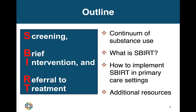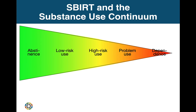Some of the slides I'll show will have more information than I speak to. Feel free to stop the video to take in those details. Before I can talk about SBIRT, I need to explain the continuum of substance use. Each of us and our patients fall into one of five categories with regard to our drinking and drug use. Low-risk use is substance use that is not causing problems in someone's life and is unlikely to do so in the future.